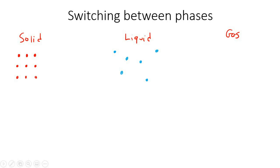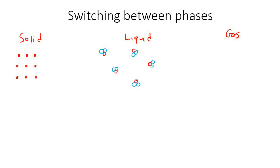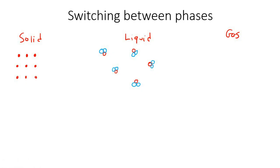Something to mention for later lessons: when I draw these little dots, I'm not necessarily saying that is a single atom. It could be a water molecule — H₂O — so you could draw three little things to represent it. When I say 'particles,' it depends on what we're talking about. For water at room temperature, one particle is two hydrogens and one oxygen because it's H₂O.